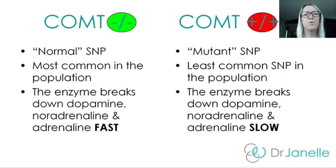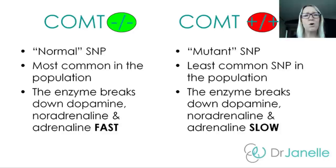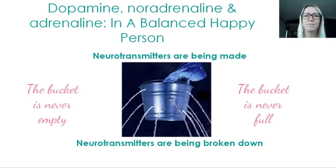With most genetic SNPs, the most common code found in the population is usually the best one to have. But with COMT, it's actually not that simple. Having two normal copies — homozygous wild type — results in an enzyme that breaks down dopamine, noradrenaline and adrenaline fast.